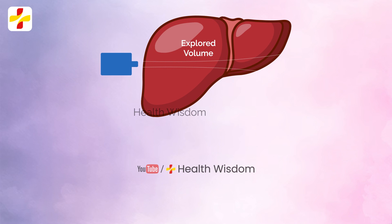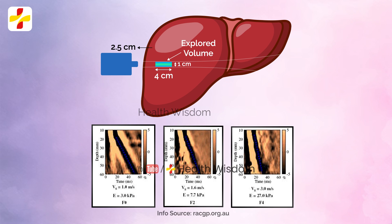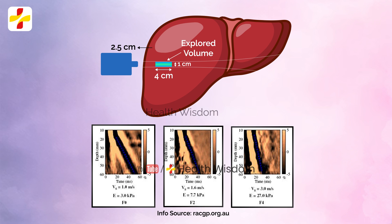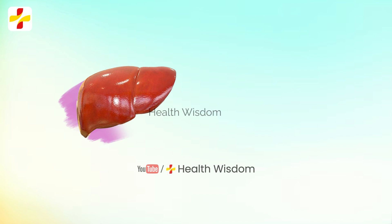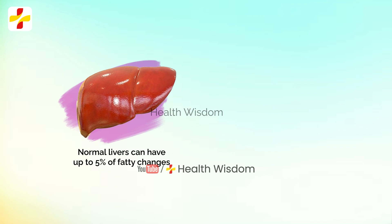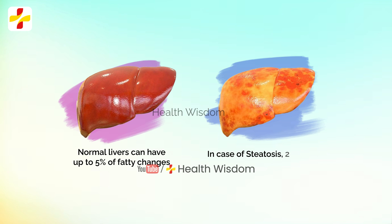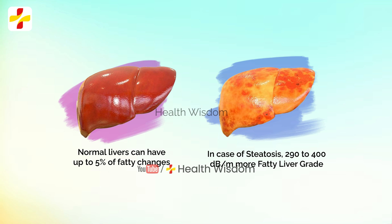CAP score is used to find out your steatosis grade in the liver. It is measured in decibels per meter (dB/m) and ranges from 100 to 400 dB/m. The CAP score and steatosis grade can both fluctuate — they can go up or down over time. Normal livers can have up to 5% fatty changes. A score below 238 dB/m means the amount of fatty change in your liver is not higher than normal.